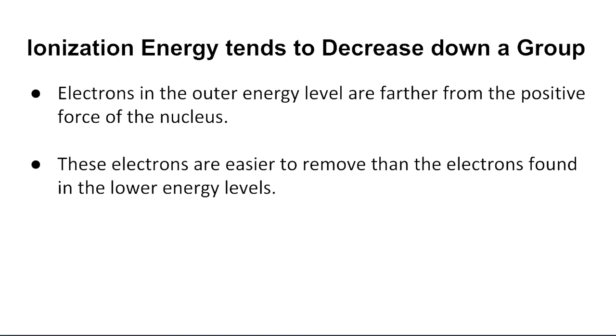So ionization energy tends to decrease down a group. So electrons in the outer energy level are farther from the positive force of that nucleus. They're barely holding on to that electron. So these electrons are easier to remove than the electrons found in lower energy levels.